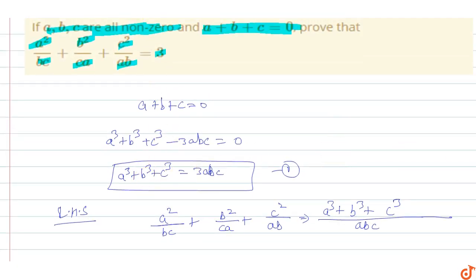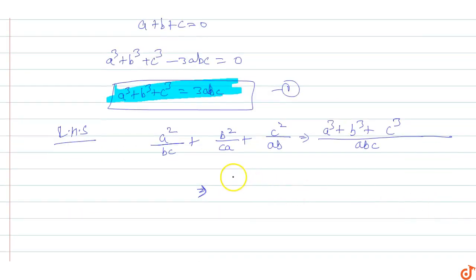We know that a cube plus b cube plus c cube equals to three times of abc. So this is three times of abc upon abc.